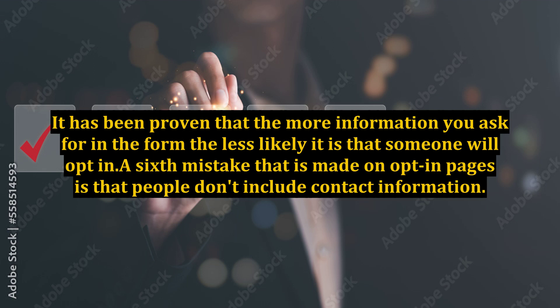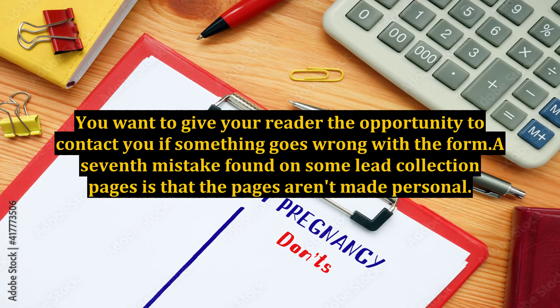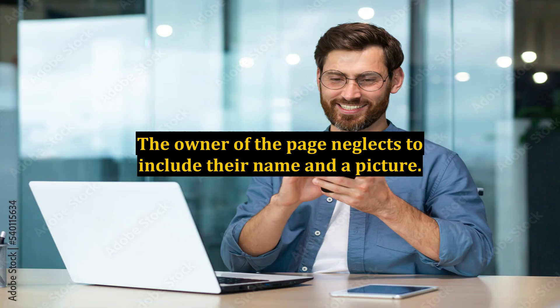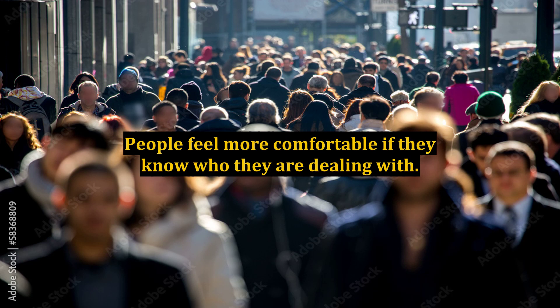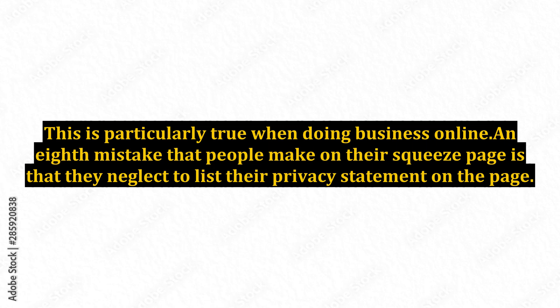A sixth mistake that is made on opt-in pages is that people don't include contact information. You want to give your reader the opportunity to contact you if something goes wrong with the form. A seventh mistake found on some lead collection pages is that the pages aren't made personal. The owner of the page neglects to include their name and a picture. People feel more comfortable if they know who they are dealing with, and this is particularly true when doing business online.